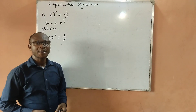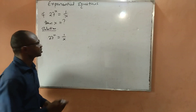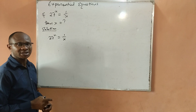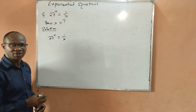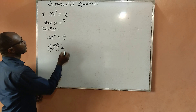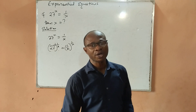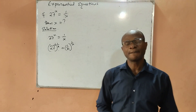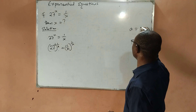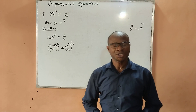The first step I will take is to raise both sides of the equation to the power 1 over x. The reason for doing that is to get rid of x on the left-hand side — the x which is the power of 27. That gives us 27 raised to power x, all to the power of 1 over x, equal to 1 over x raised to the power 1 over x. When you raise both sides of an equation to the same power, you have not changed the equation.